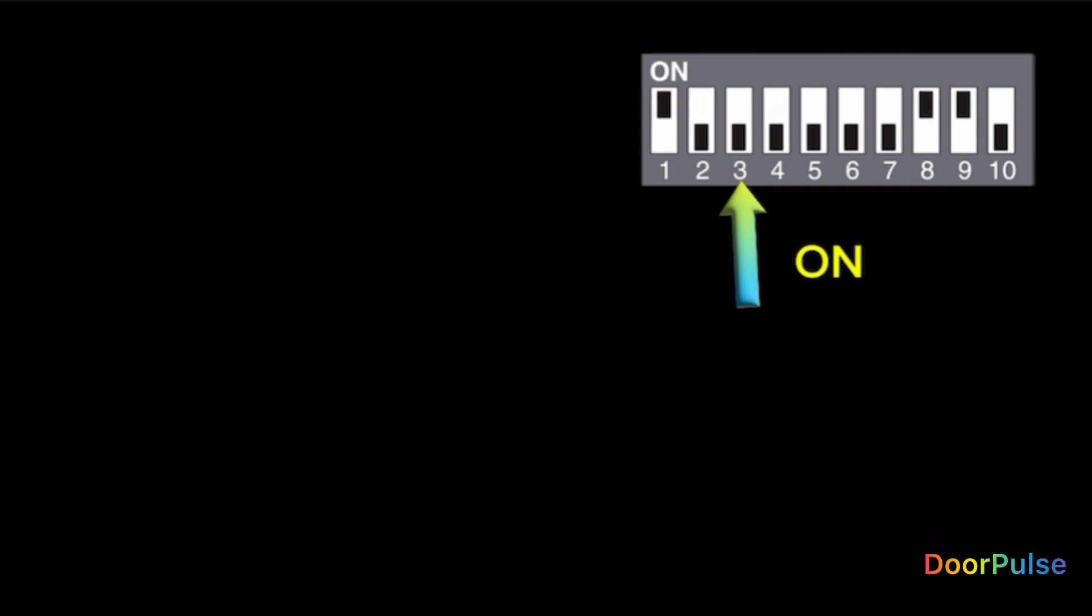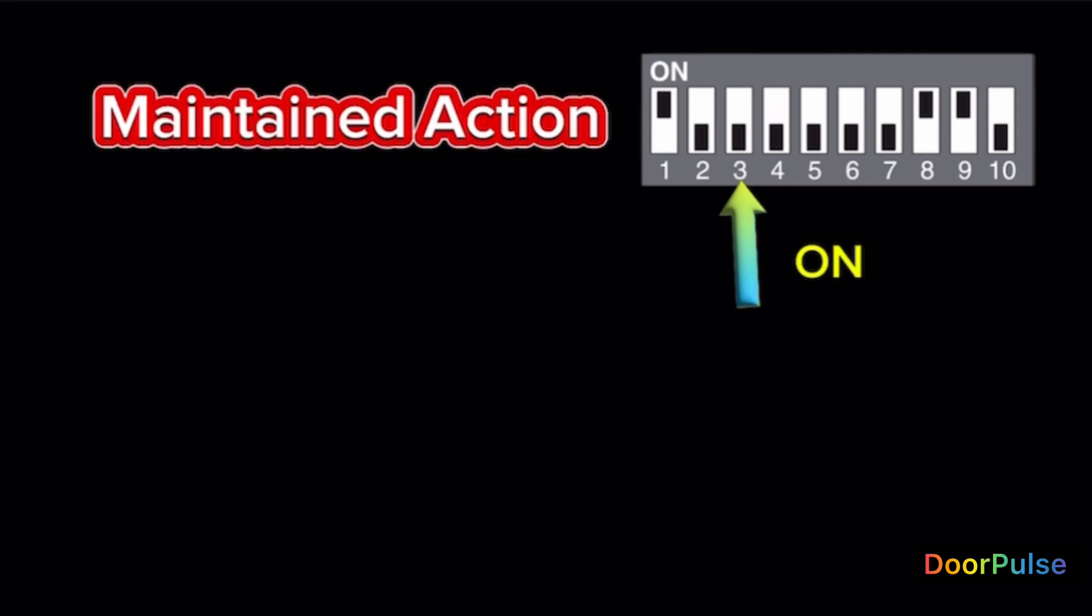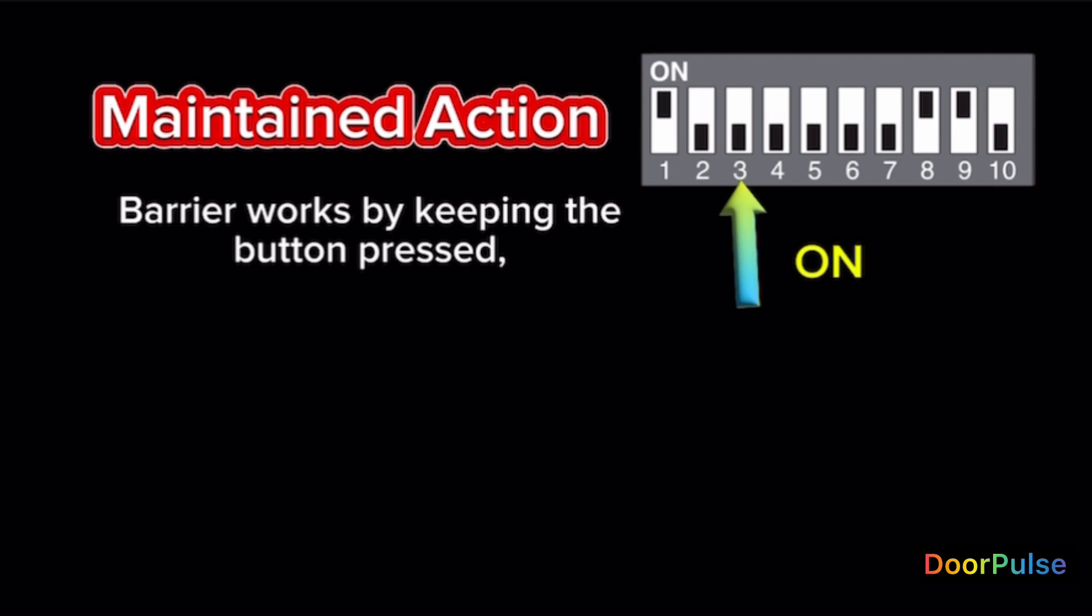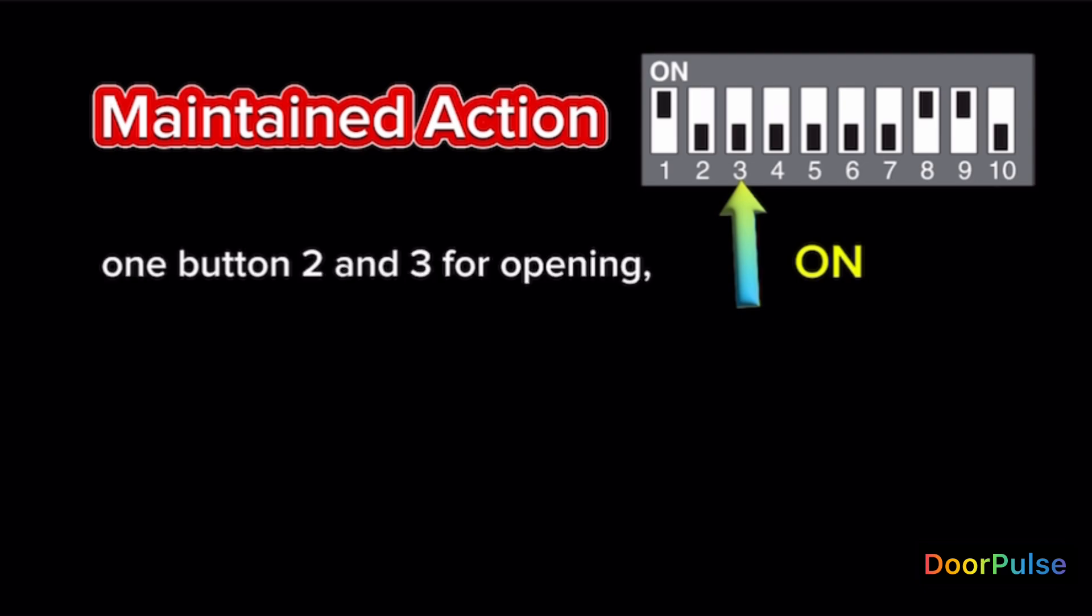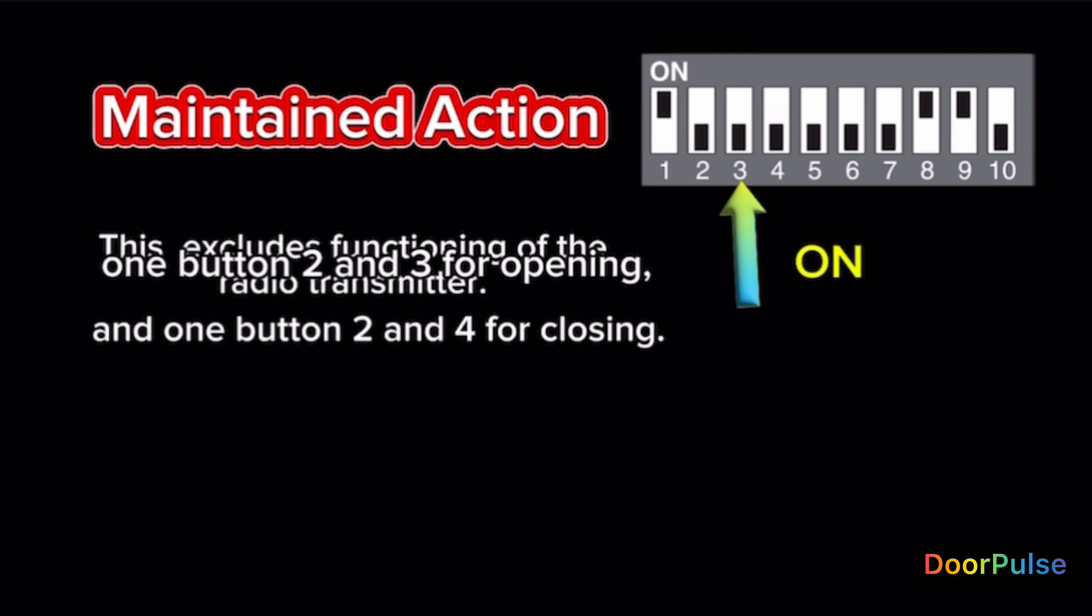Switch 3 ON. Maintained action. Barrier works by keeping the button pressed. 1 button 2 and 3 for opening and 1 button 2 and 4 for closing. This excludes functioning of the radio transmitter.